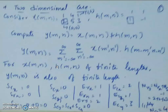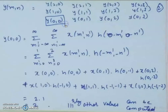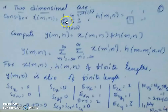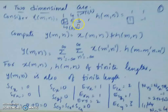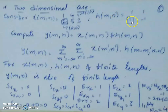Let us consider x[m,n] = [1,4,1; 2,5,3], where the origin is at index 2. When moving up the row index increases, and when moving right the column index increases. The indices run from (0,0) to (1,2). And h[m,n] = [1,1; 1,-1], with the zero origin at (0,1).